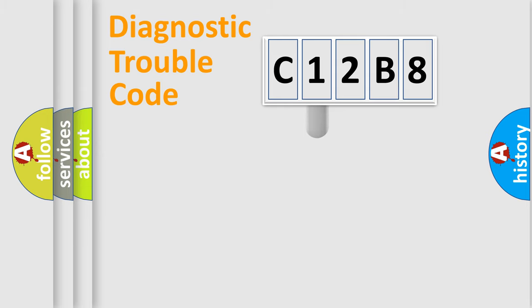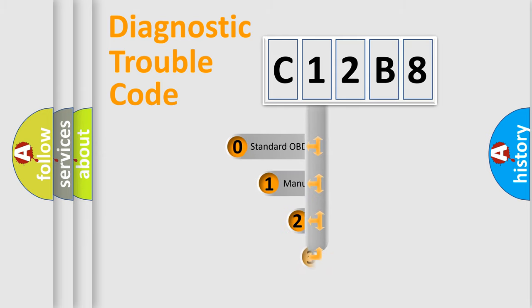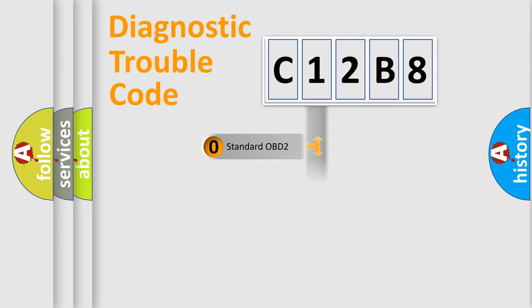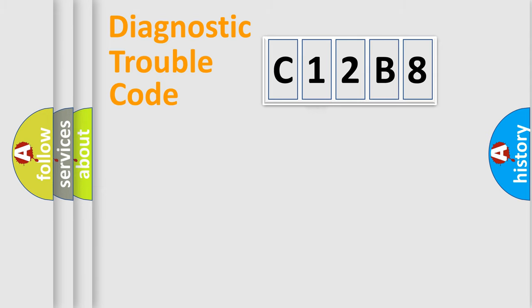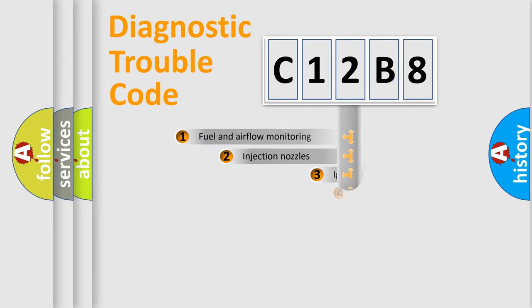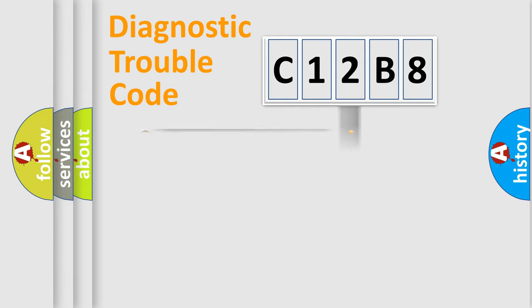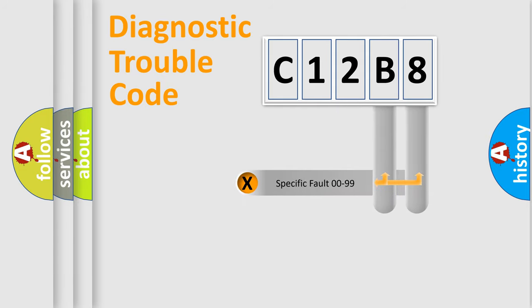This distribution is defined in the first character of the code. If the second character is expressed as zero, it is a standardized error. In the case of numbers 1, 2, or 3, it is a manufacturer-specific error expression. The third character specifies a subset of errors. This distribution is valid only for the standardized DTC code, and only the last two characters define the specific fault of the group.